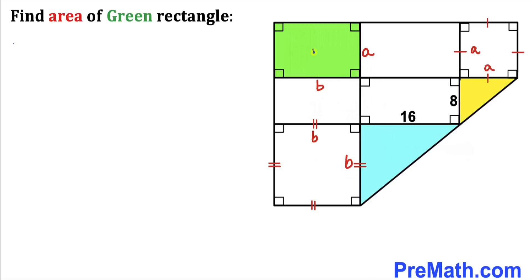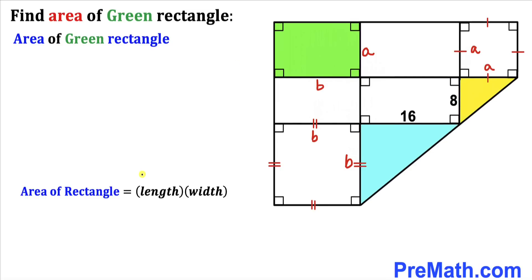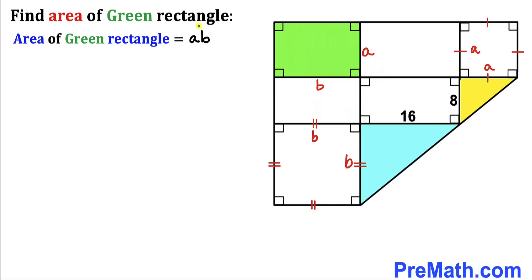So we can see that the side lengths of this green rectangle turn out to be A and B. Now we are going to calculate the area of this green rectangle. Recall the area of rectangle formula: area equals length times width. Therefore, the area of this green rectangle is going to be length B times width A, so the area equals A times B. Our task is now to find the value of A times B.